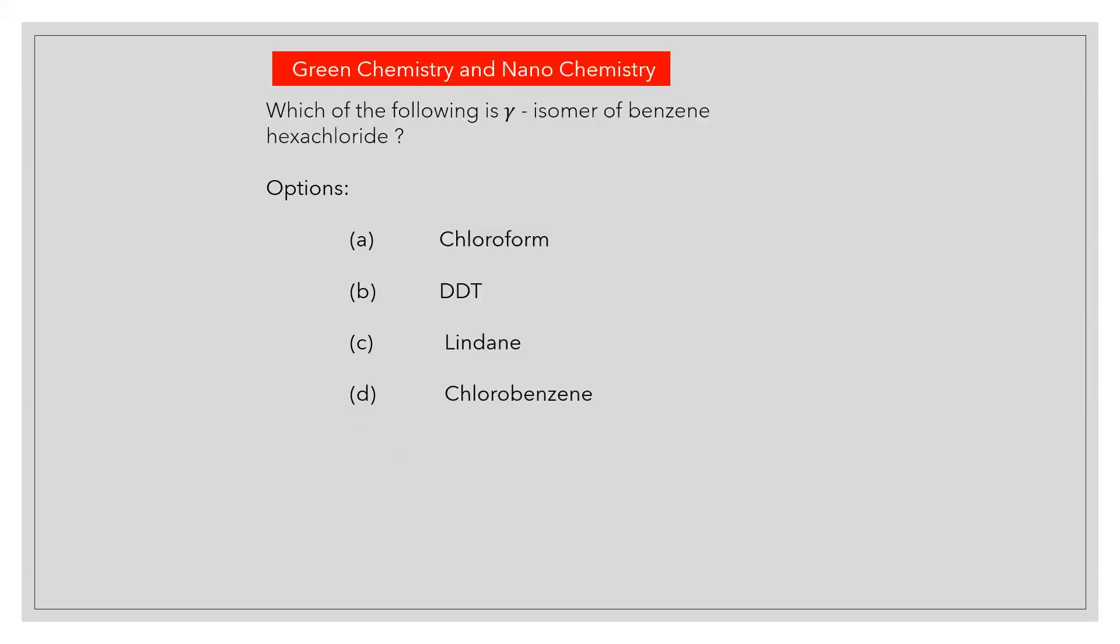Which of the following is gamma isomer of benzene hexachloride? Answer C: Lindane.